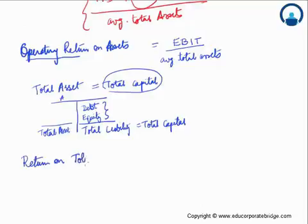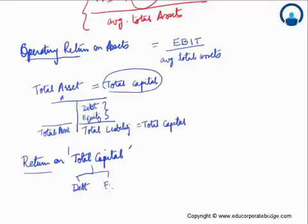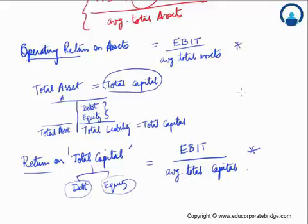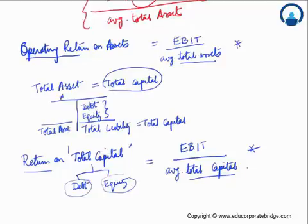If we change this definition of operating return on assets to return on total capital — total capital comprises debt and equity — then in the numerator, the return that accrues to both debt and equity holders is earnings before interest and taxes. It should not be after interest, because we are considering total capital in the denominator. So EBIT is the true measure for the numerator, and at the denominator we have average total capital. Both definitions — return on total assets and return on total capital — are actually the same.